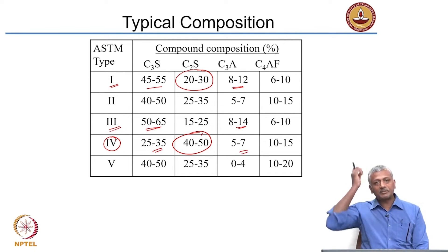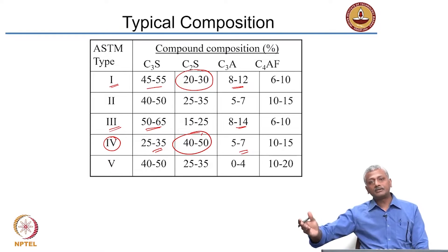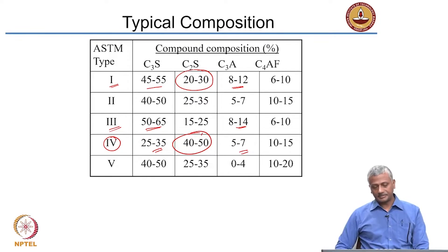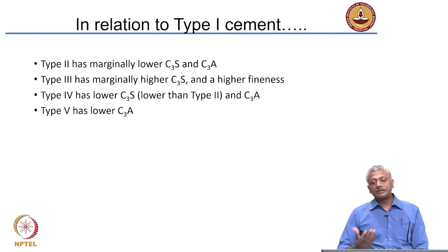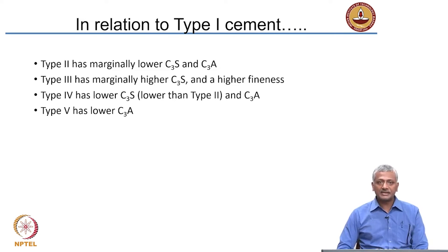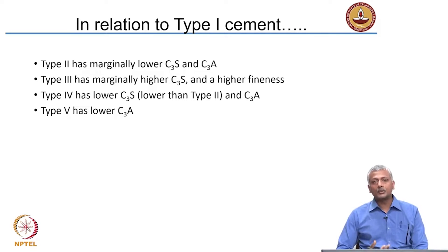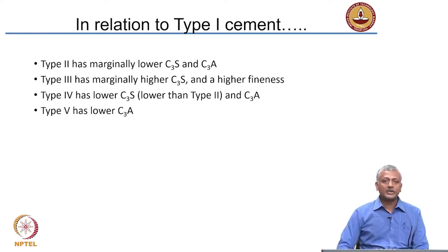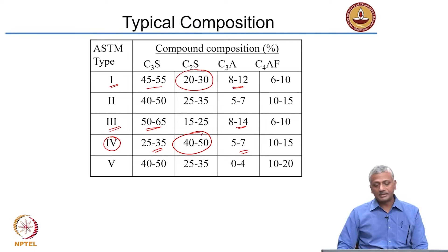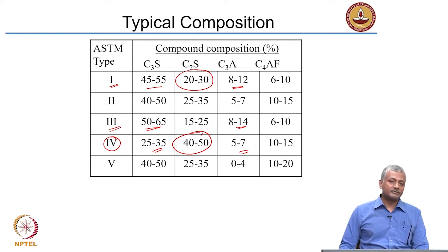These characteristics are important to keep in mind when thinking about how different cements are designed. In relation to Type 1 general purpose cement: Type 2 will have marginally lower C3S and C3A; Type 3 will have marginally higher C3S and higher fineness; Type 4 will have lower C3S, lower C3A, and much higher C2S content; and Type 5 will have a lower C3A content. That is what is shown in this table in terms of compound quantities in different types of cements.